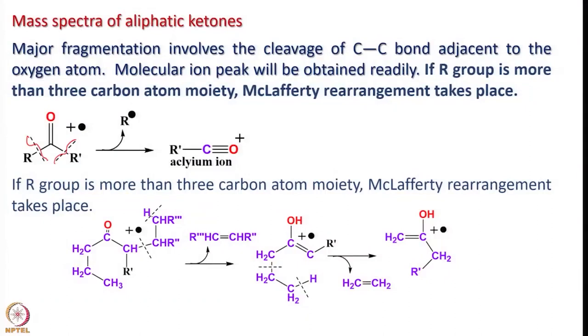Let me look into the mass spectra of aliphatic ketones. The major fragmentation involves the cleavage of the C-C bond adjacent to the oxygen atom. Molecular ion peaks will be obtained readily in this case. If the R group has more than 3 carbon atoms — a longer chain — then McLafferty rearrangement takes place.